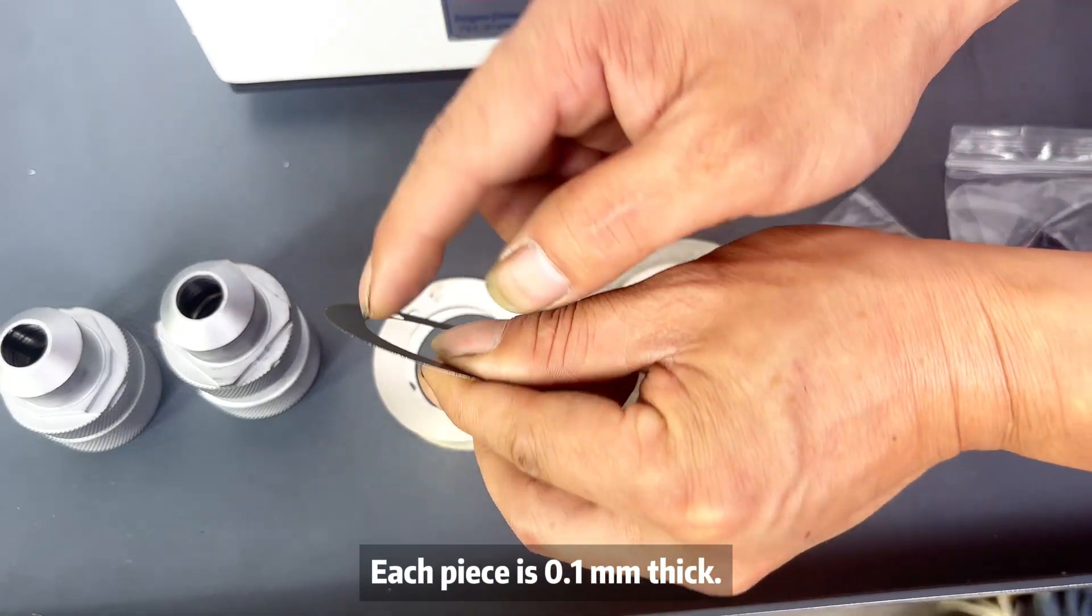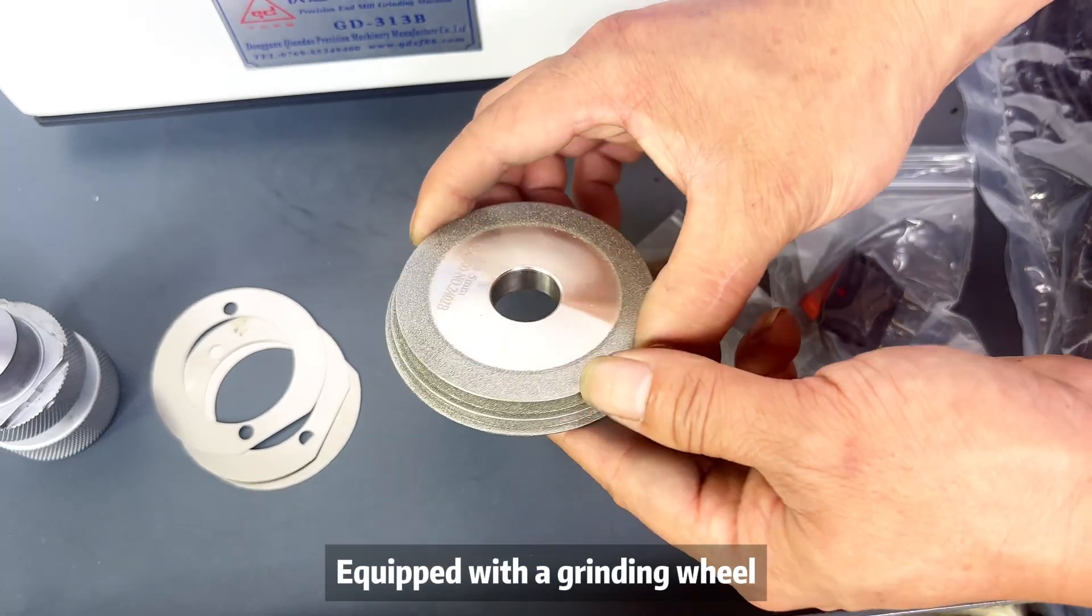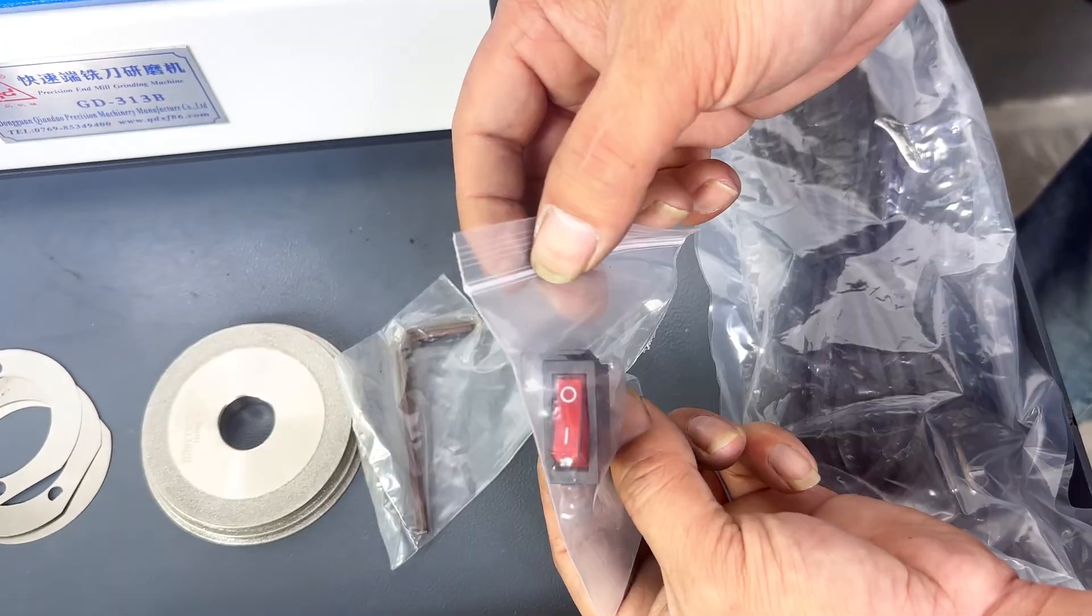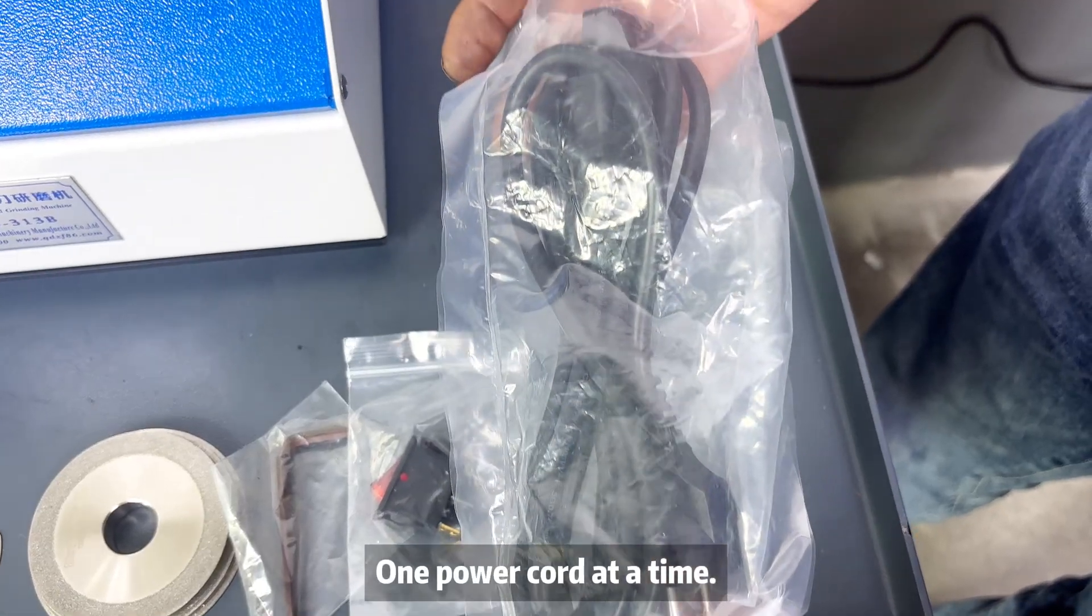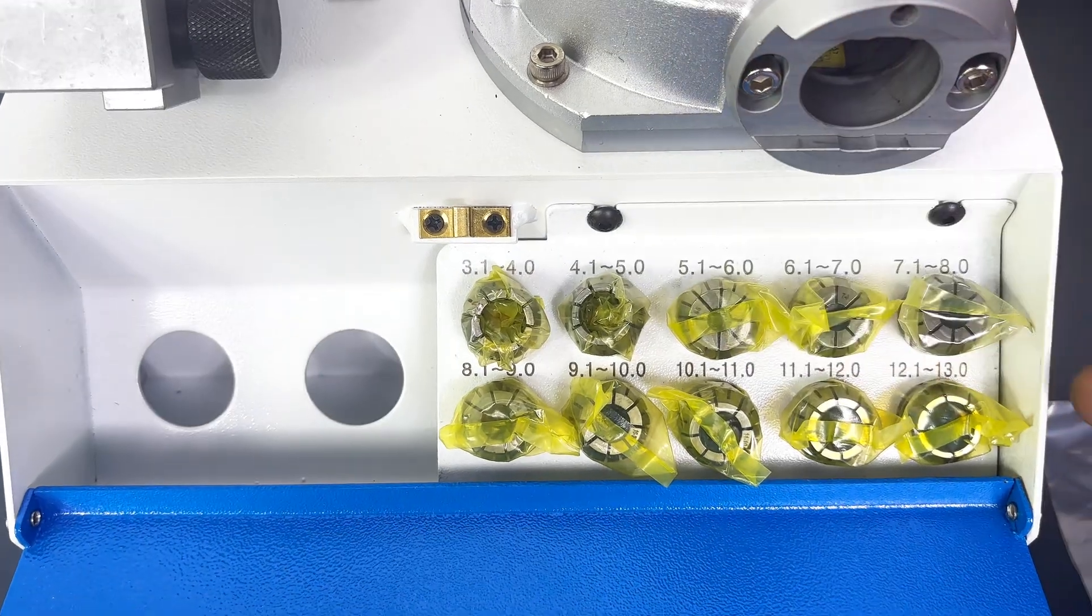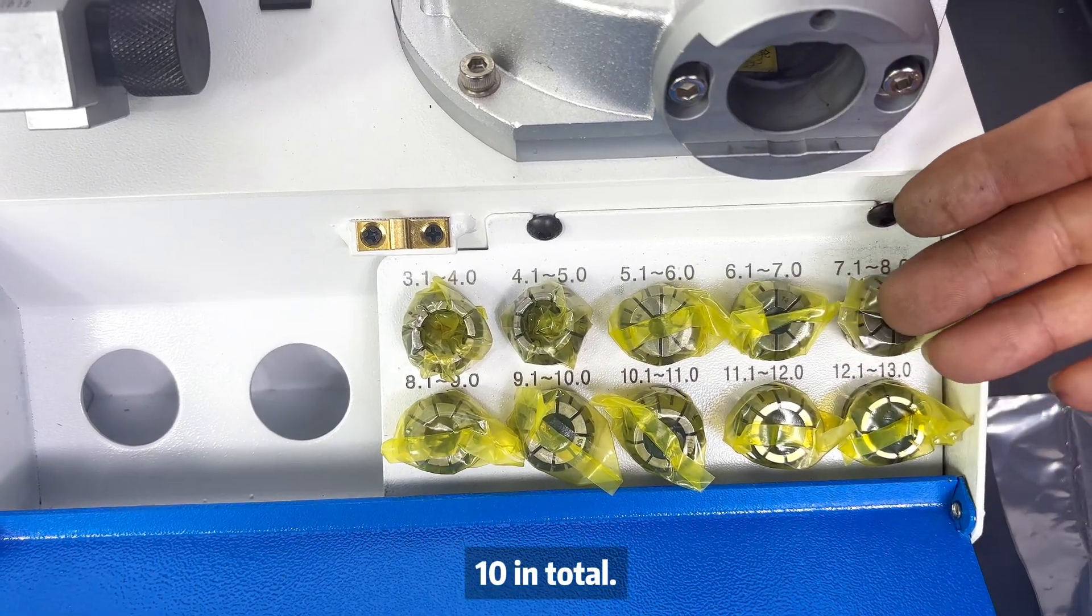Each piece is 0.1mm thick, equipped with a grinding wheel, 1 inner hexagon, 1 power cord at a time. Comes with collate 3-13mm, 10 in total.